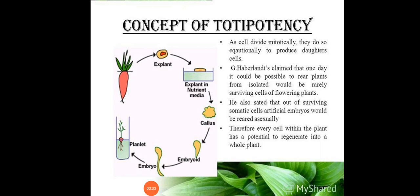The main concept is that every plant cell — whether it is from the root, stem, meristem, anthers, or pollen grains — any part of the plant can be used to produce a whole plant without gametes. Somatic cells can produce the same type of plant through culture.